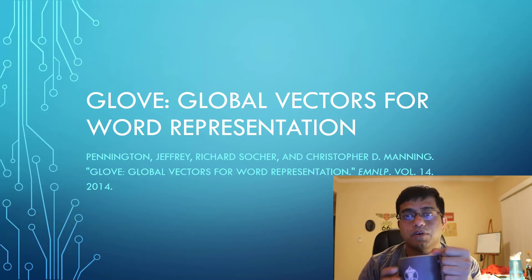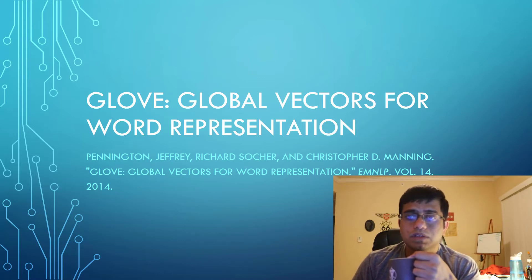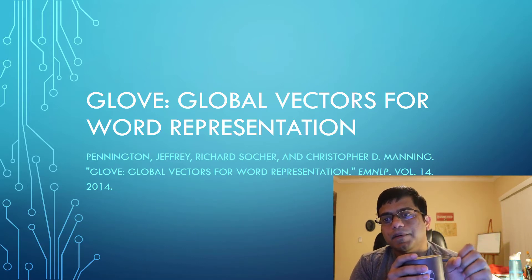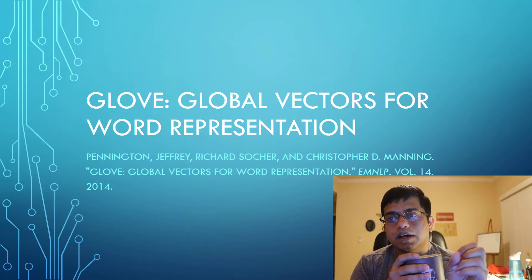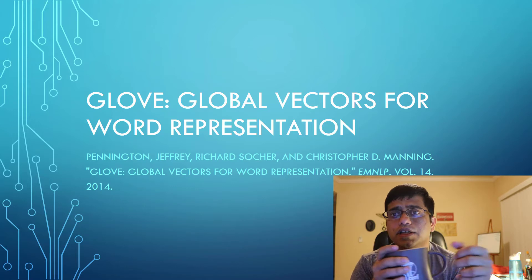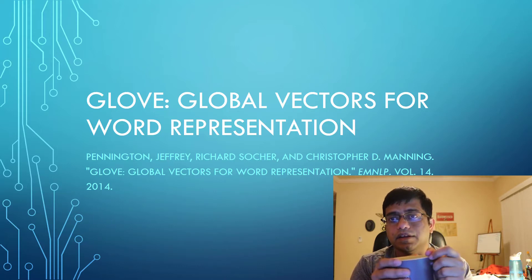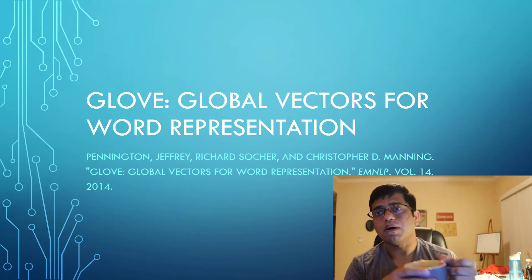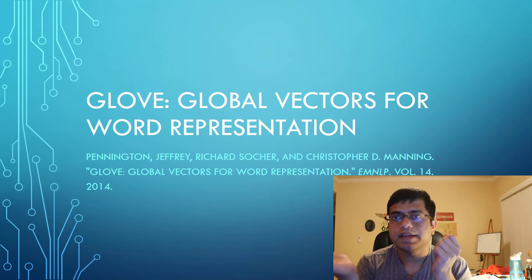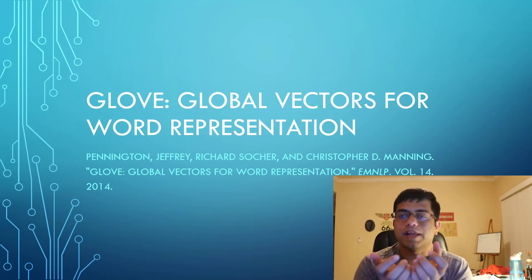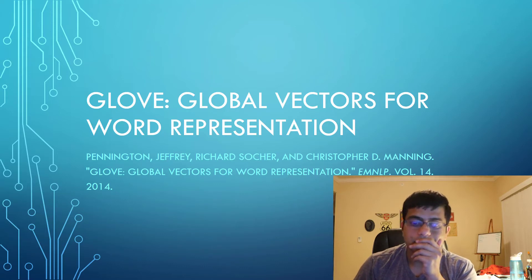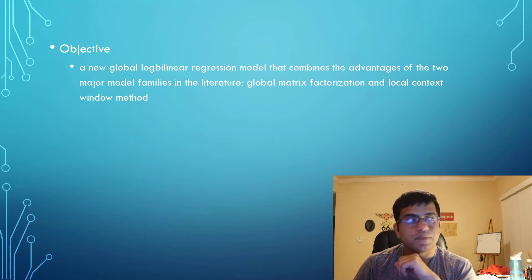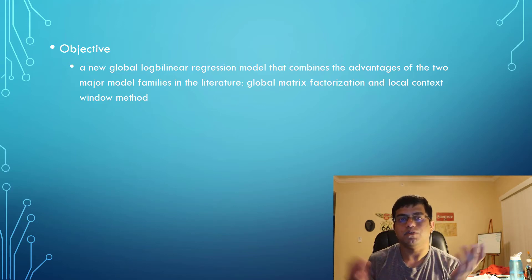What is the objective of this paper? On one side you have techniques of matrix factorization, and on the other side you have techniques we discussed in our last videos like word2vec and other skip-gram models and continuous bag of words. How do we combine the best of both? One comes up with complex patterns, the other has statistical information. The objective is to come up with a global log bilinear regression model that takes advantages of the two major model families.